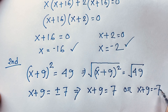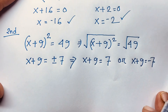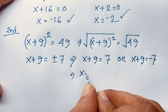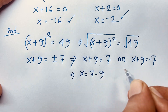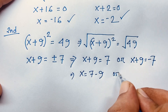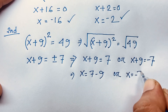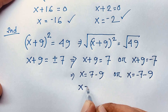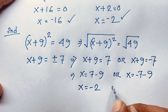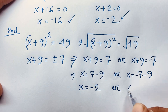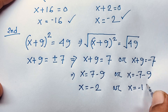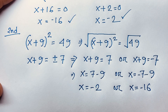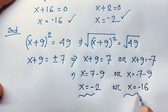From the two cases: x equals 7 minus 9, or x equals negative 7 minus 9. So x equals negative 2, or x equals negative 16. Both methods give the same answers.